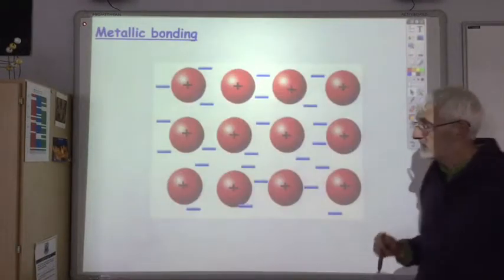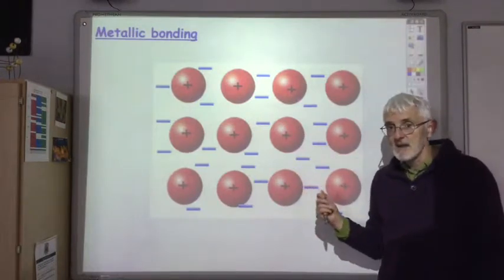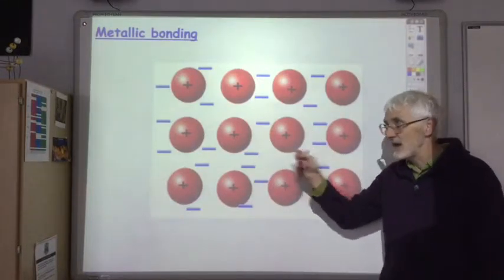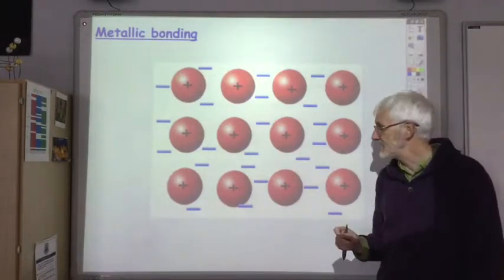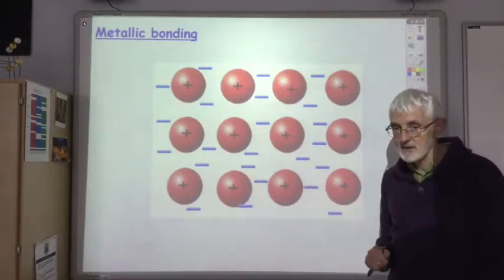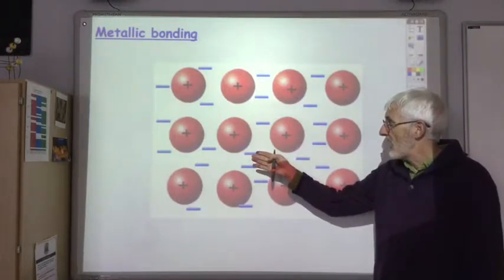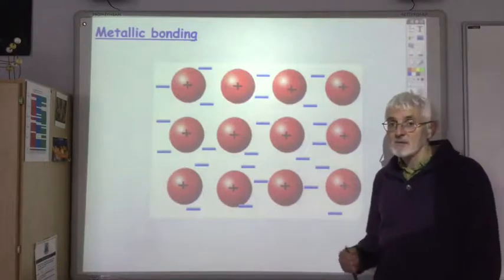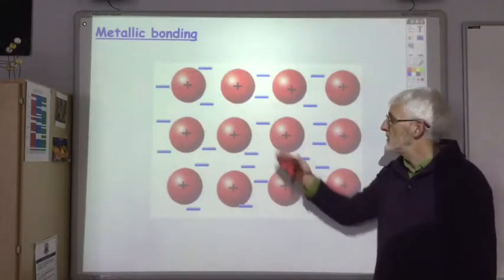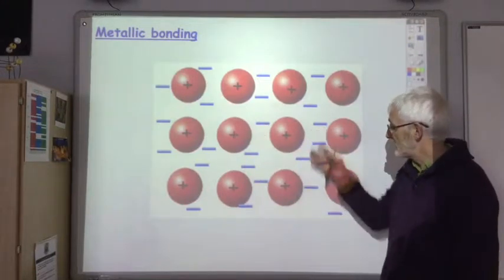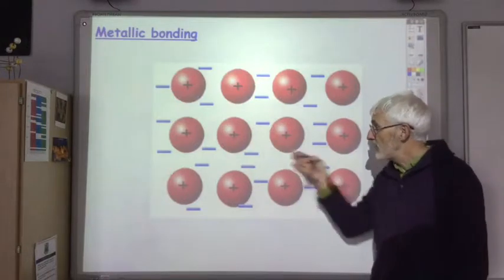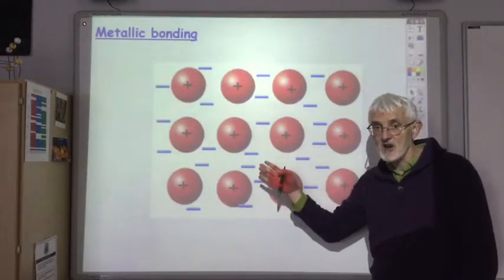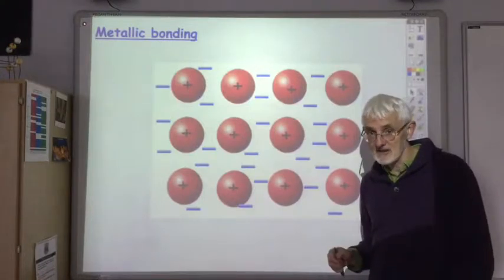Let's remind ourselves how metals are held together. This is the metallic lattice — it consists of an array of positively charged metal ions and delocalized electrons. These electrons come from the metal atom. Say it was sodium with the electron arrangement 2,8,1 — all the atoms lose the outer electron to become 2,8, producing the sodium ion. These electrons are delocalized, meaning they can move throughout the structure when solid or liquid, allowing metals to conduct electricity when solid.